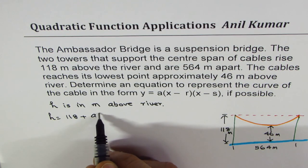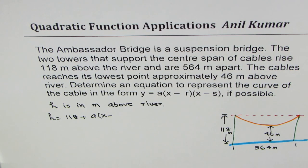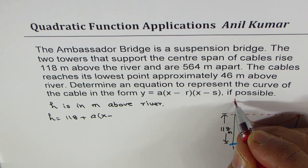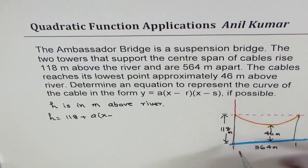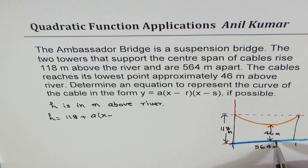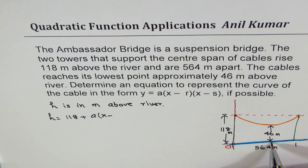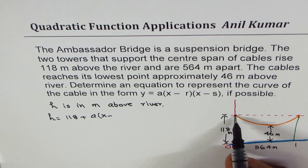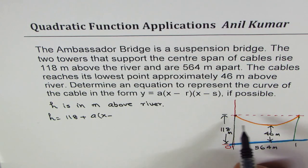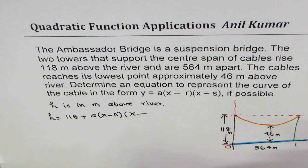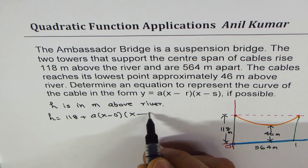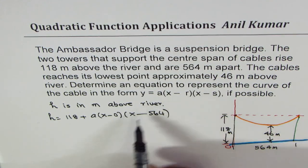I'll choose my origin along this line — so that's my origin. From here, 118 is the height of the tower, so the maximum height of the cable is this, and the minimum is 46 over the water level. If I add 118, I'm already at this point. Now from this point it comes to zero, so I can say at x equals zero I'm zero, times x minus 564, which will be that point at 564. So that gives me a factored form of the equation.